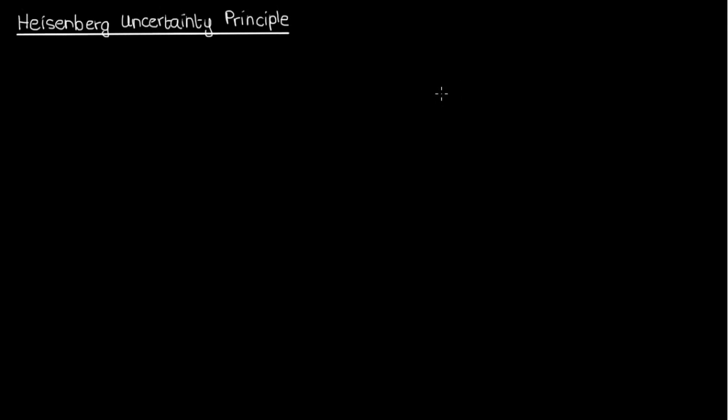Greetings students and welcome back to another video on quantum mechanics. In this lesson we're going to derive and discuss the Heisenberg uncertainty principle. In the last video we left off by defining the two operators x-hat for position and p_x-hat for the x momentum, and we're going to use these two operators to derive the Heisenberg uncertainty principle in this video.